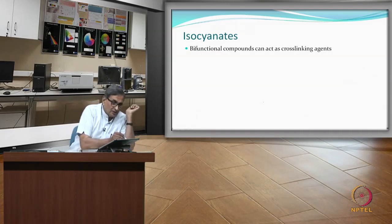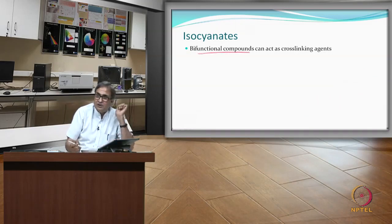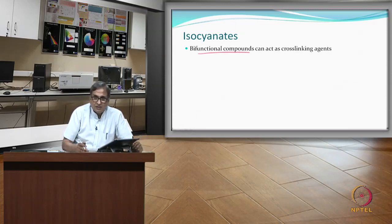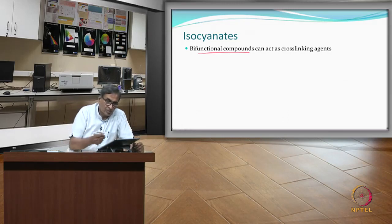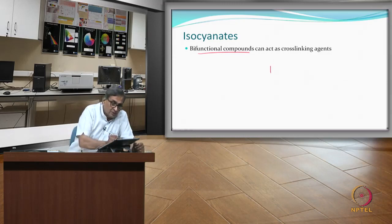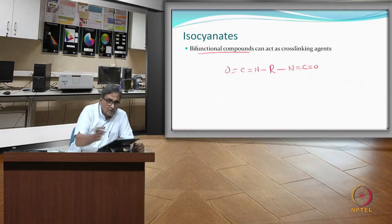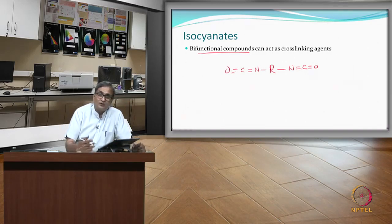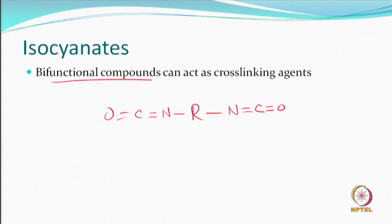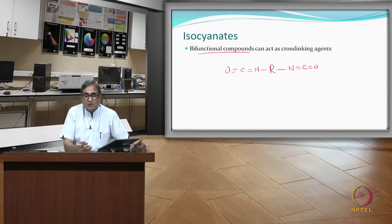The key requirement is that only bifunctional agents can be used as cross-linking agents in this context. Many different types of bifunctional isocyanate compounds can be synthesized and used to achieve cross-linking.